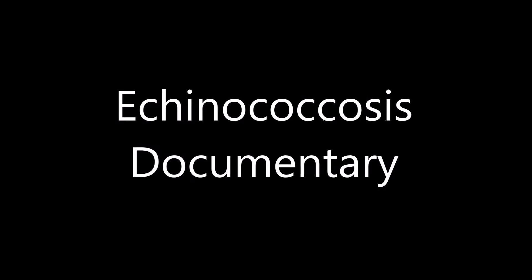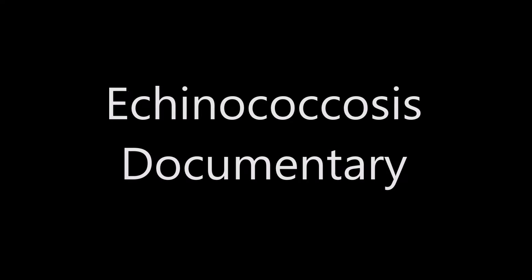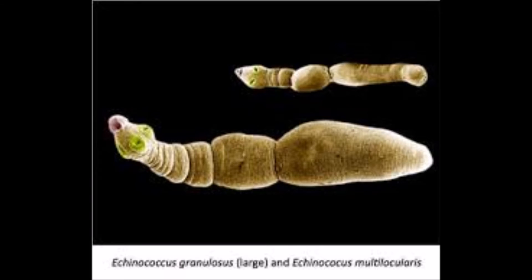Echinococcosis is caused by scythe-like tapeworm larvae growing in the body. It usually involves the liver or lungs but can be found in other organs. They are slow growing, and those infected with echinococcosis may not have symptoms for many years after being infected.